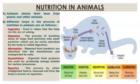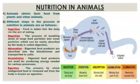The next topic is nutrition in animals. Animals show heterotrophic mode of nutrition, which means they depend on other animals or plants for their nutrition. Animals obtain their food from plants and other animals. The different steps in the process of nutrition in animals are as follows. The first process is ingestion, in which food is taken into the body via the act of eating or engulfing the food.